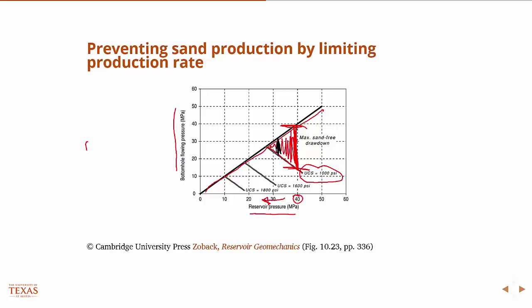So your production rate in the absence of sand shrinks. These other lines correspond to stronger materials — at 1600 psi unconfined compressive strength you have a larger window, and at 1800 psi you have a larger window still. These curves are produced by results of numerical simulation.